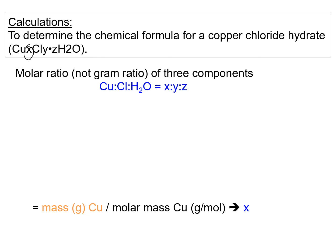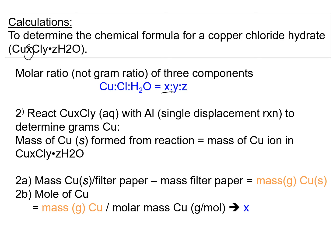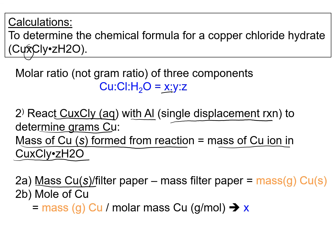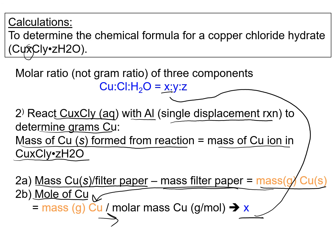Next, determine the moles of copper — X in your formula. You reacted aqueous copper chloride with solid aluminum in a single displacement reaction to determine the grams of copper formed. Note that the mass of solid copper formed equals the mass of copper ions originally in the copper chloride hydrate compound, since it is an ionic compound. Calculate the mass of copper by taking the mass of the copper plus filter paper after heating and cooling, minus the mass of just the filter paper. Then convert that mass of copper using the molar mass of copper to get moles of copper — that is X in your formula.